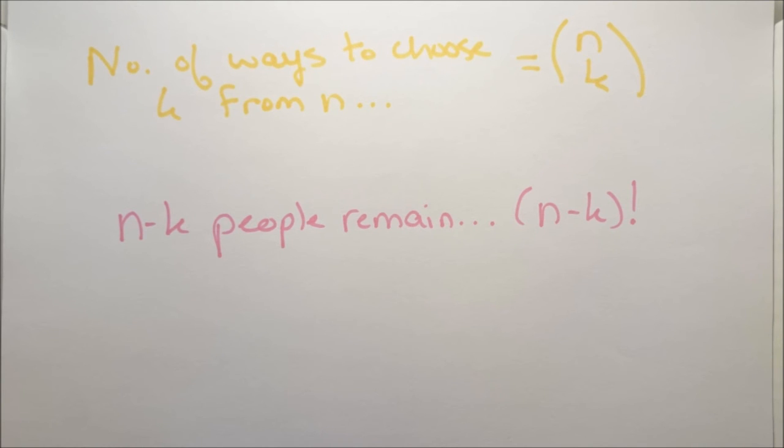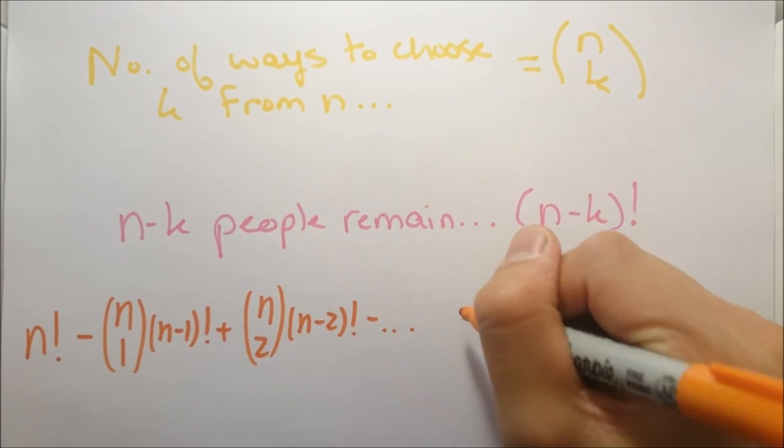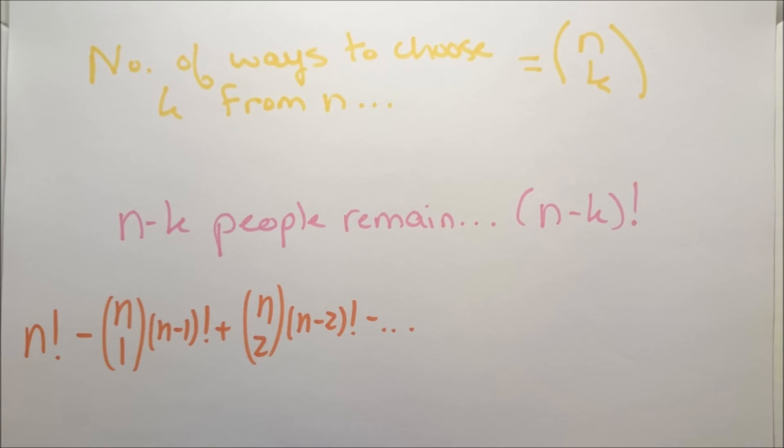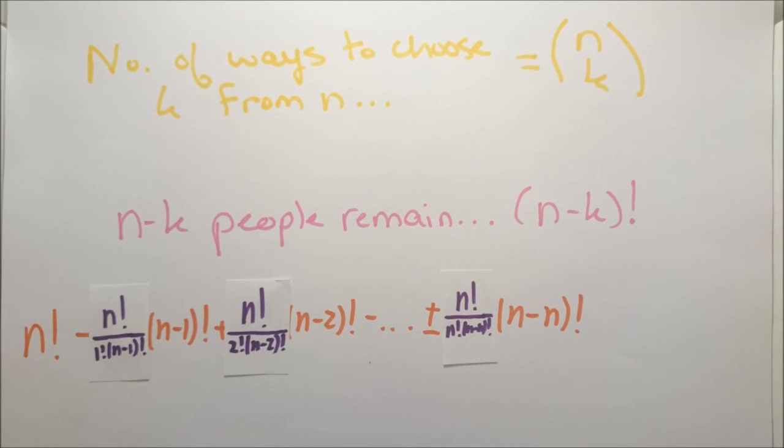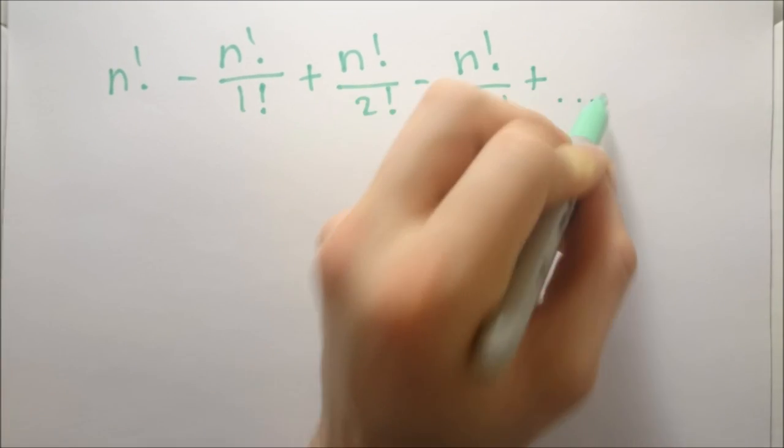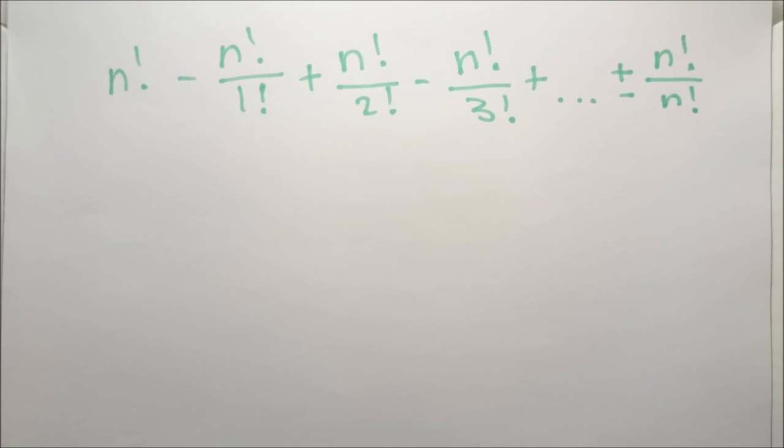Combining these terms we have n factorial minus n choose 1 multiplied by n minus 1 factorial plus n choose 2 multiplied by n minus 2 factorial all the way up to plus or minus n choose n multiplied by n minus n factorial. We write n choose k as n factorial divided by n minus k factorial times k factorial. We can see that the n minus k factorials all cancel so we are left with n factorial minus n factorial over 1 factorial plus n factorial over 2 factorial minus n factorial over 3 factorial all the way up to n over n factorial.